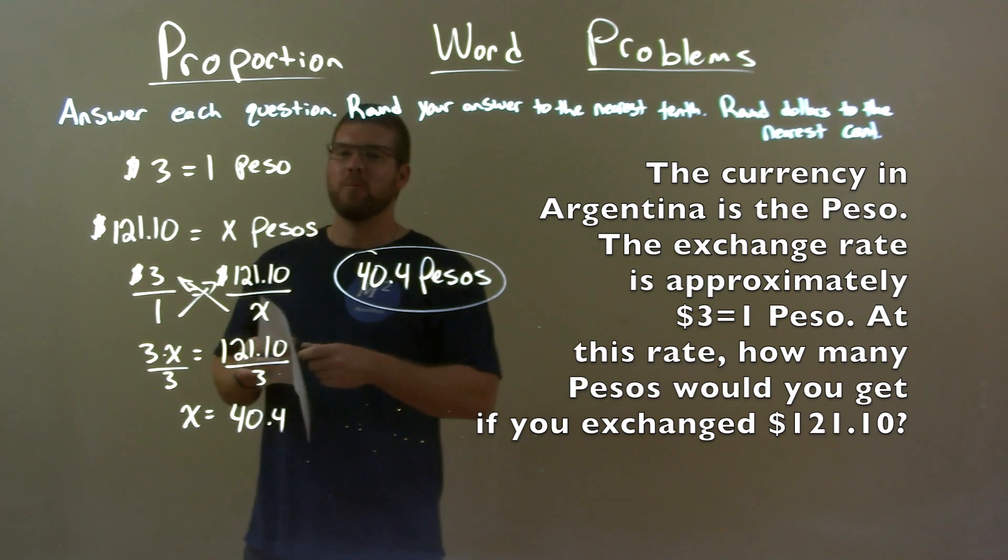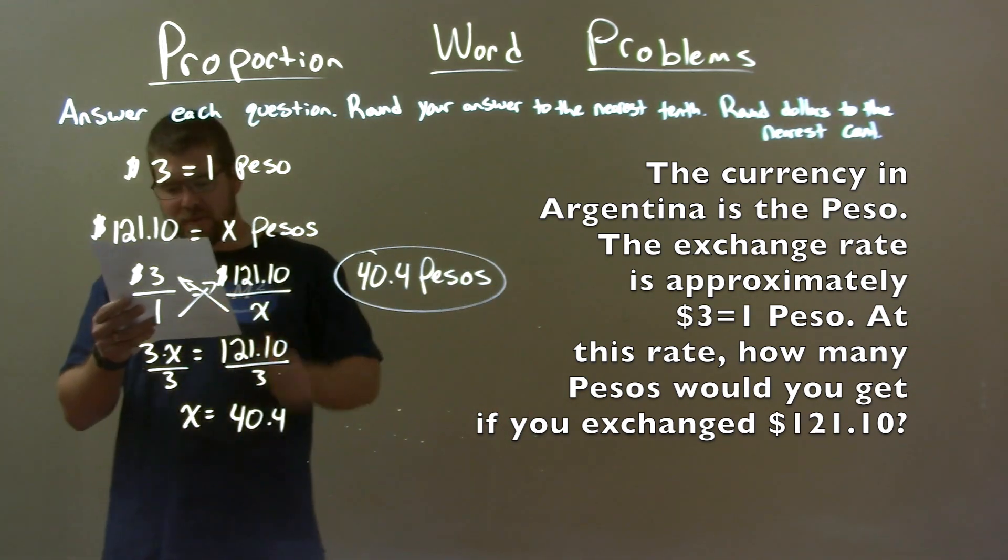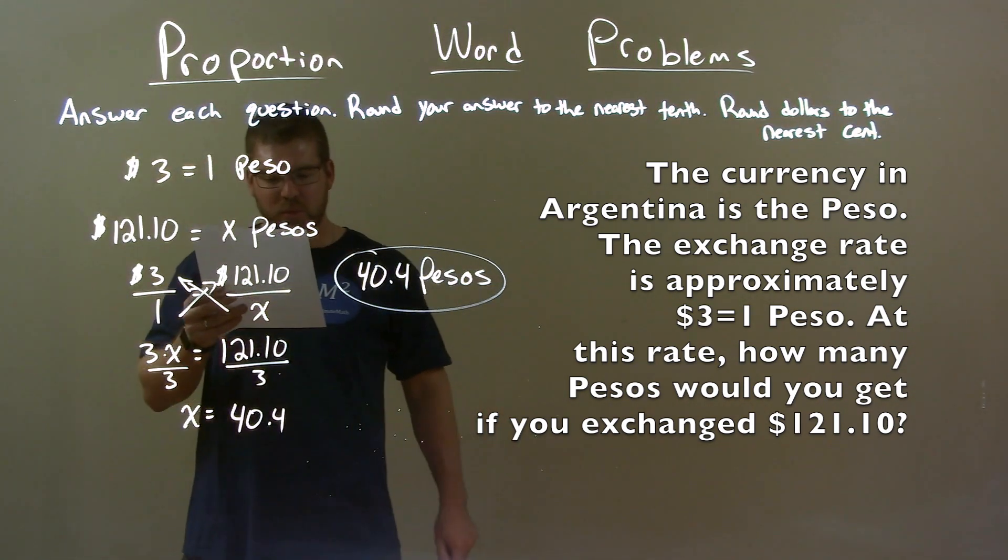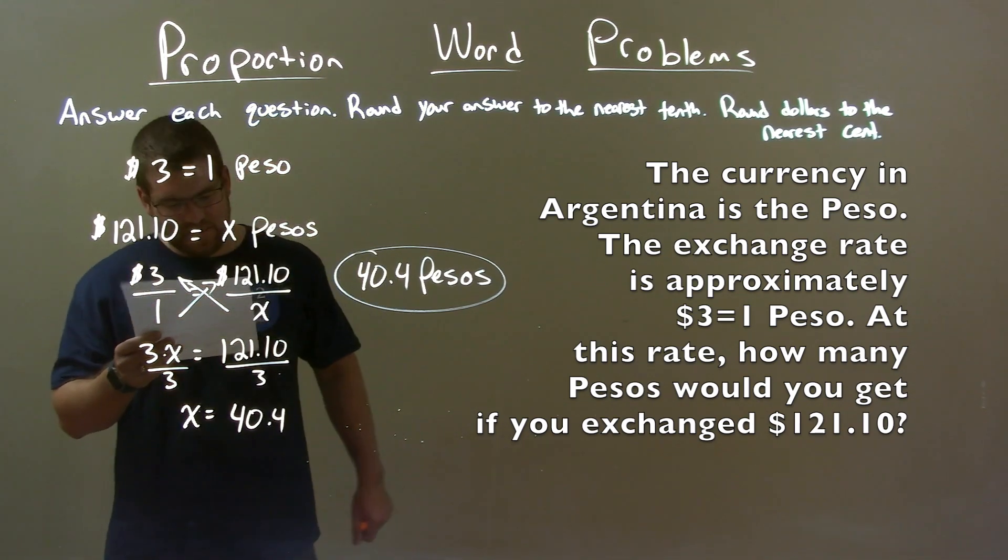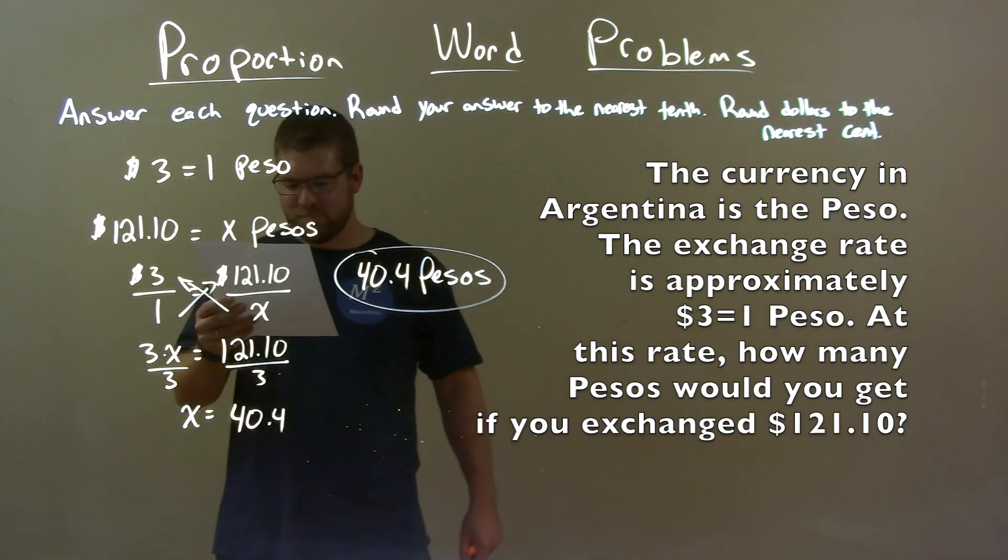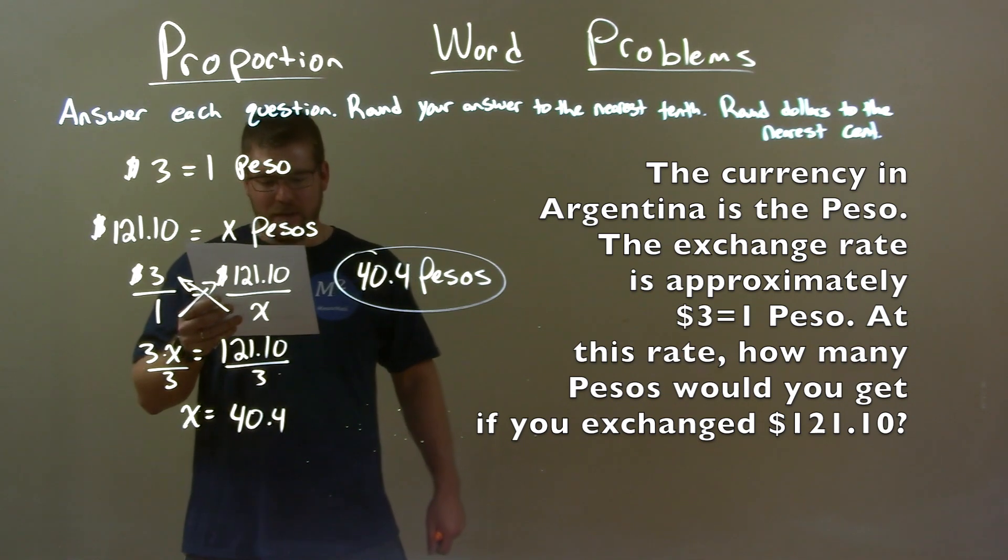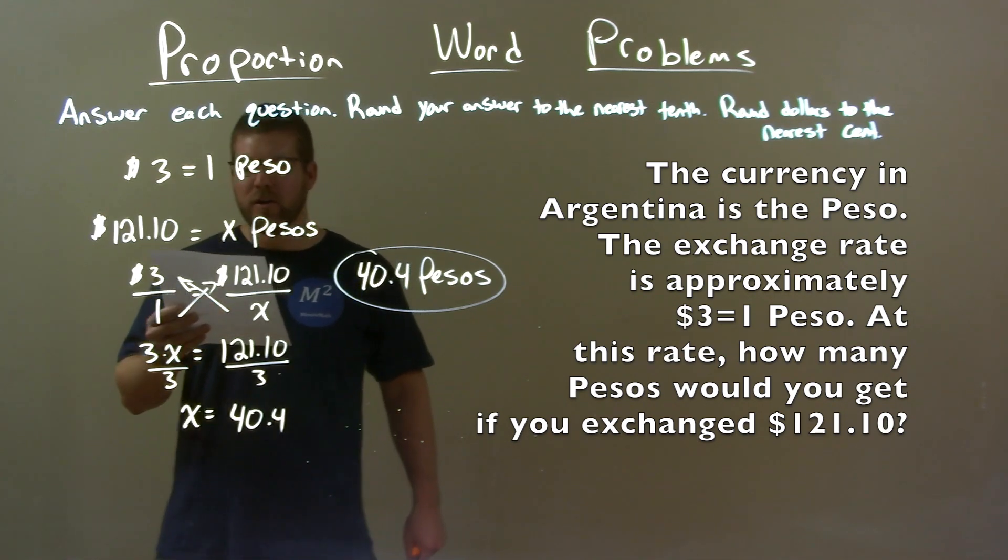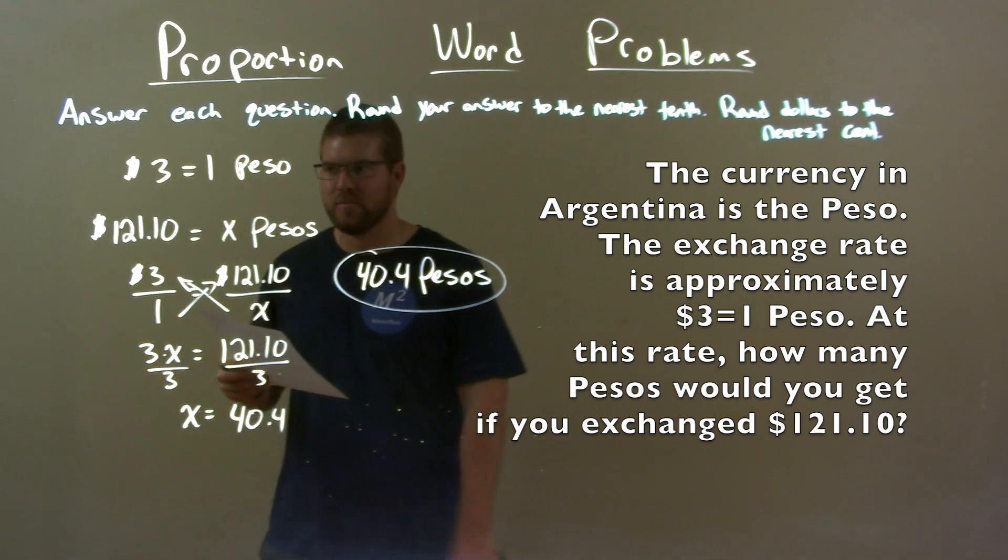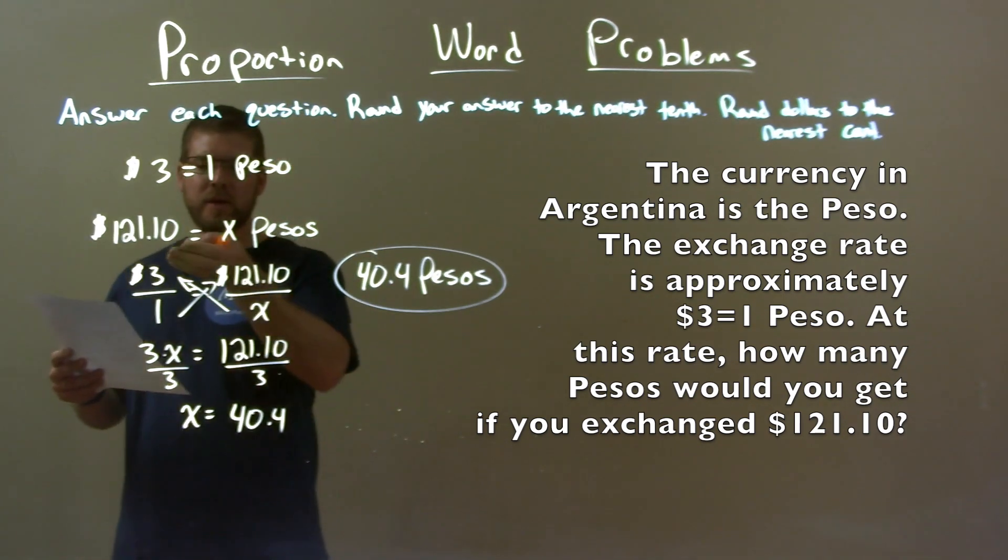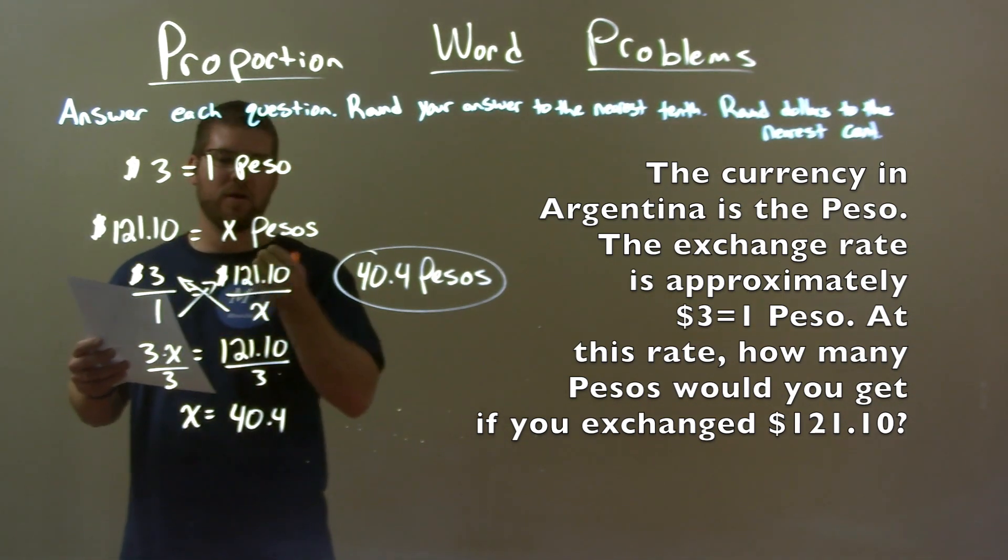So quick recap. We're given the question: the currency in Argentina is the peso. The exchange rate is approximately three dollars to one peso. At this rate, how many pesos would you get if you exchanged $121.10? So we set up a proportion: three dollars to one peso equals 121 dollars.